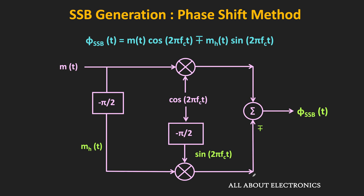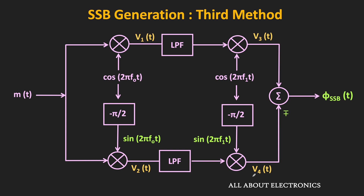In the previous video, we have seen that in the phase shift method, we need a circuit which can provide a phase shift of minus 90 degrees to the entire baseband signal, and to implement such a circuit is very difficult. But in Weaver's method, we do not need to provide a minus 90 degree phase shift to the entire message signal. So first, let us briefly see the different blocks of this Weaver's method, and later we will understand it in detail.